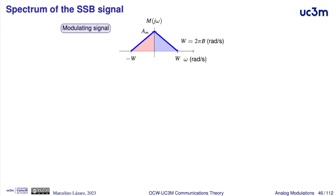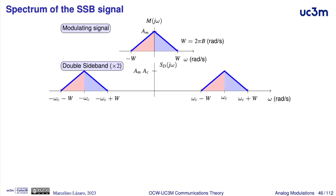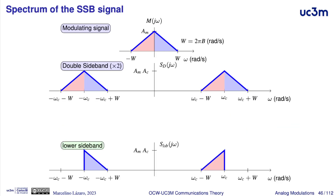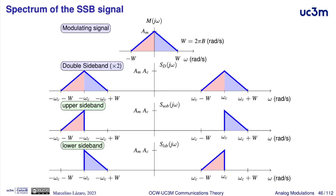Here we have a visual example in the frequency domain. This is the frequency response of the modulating signal. First we generate a double sideband with double amplitude — we can see that we have two sidebands, so the bandwidth is twice the bandwidth of the modulating signal. Then by filtering, one of the sidebands is removed. If the frequencies removed are below ω_c, we have upper sideband modulation. If the frequencies removed are above ω_c, we have lower sideband modulation. The name of the variant corresponds to the sideband that is kept: upper sideband or lower sideband.